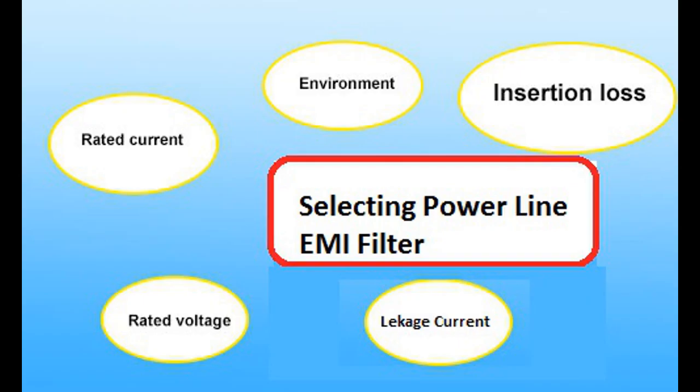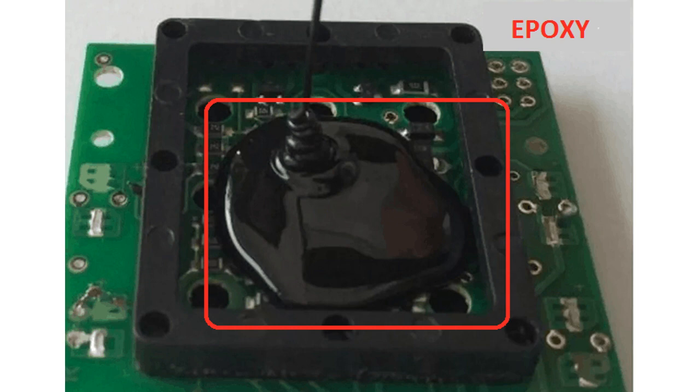When selecting the power line filter, three main indicators should be considered. First is voltage and current rating, the following is insertion loss, and finally it is size and structure. Since the filter inside is typically epoxy-potted, environment is not a main concern.